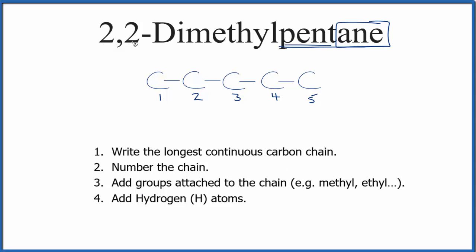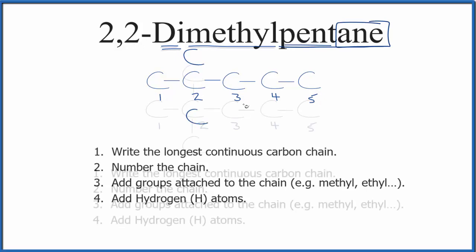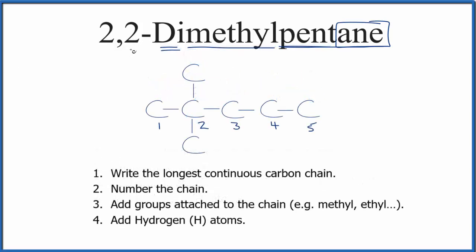Here we have 2,2-dimethylpentane. So we have the methyl group. We'll have two methyl groups, and they'll each be on the second carbon. So we can add a carbon here and a carbon here. So this is the structure for 2,2-dimethylpentane.